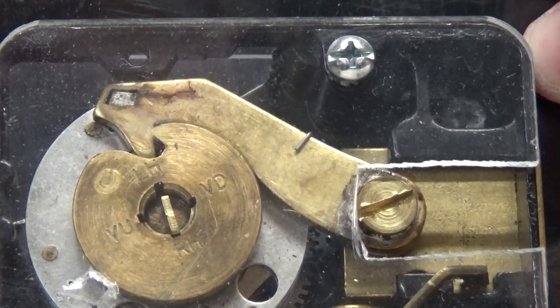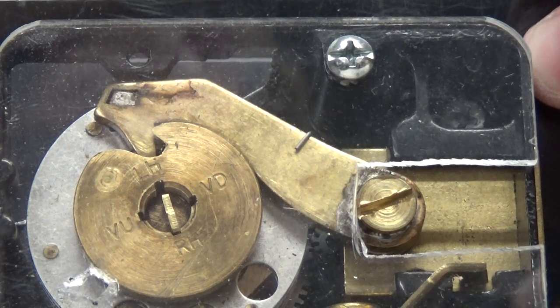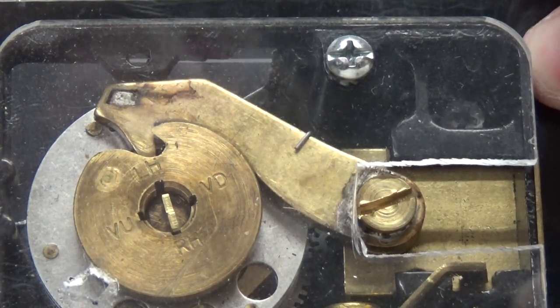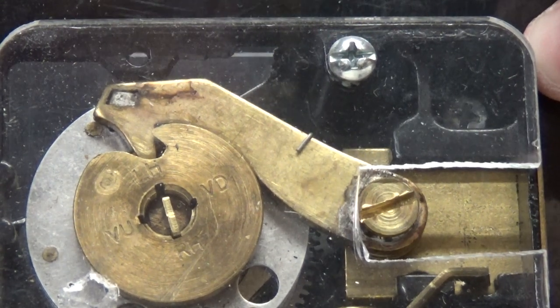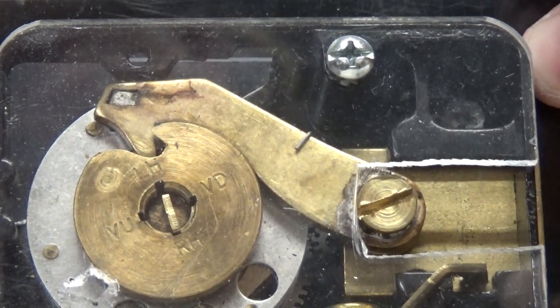Then it allows you to spin it and once that's done spinning, the combination will be set. You remove the key, it will relock into position and then you'll be able to dial the new combination.